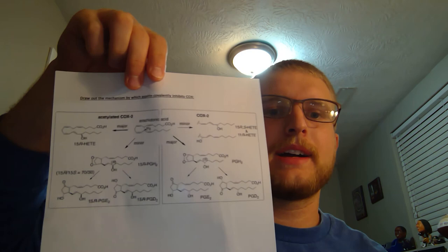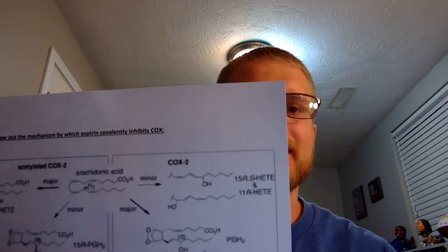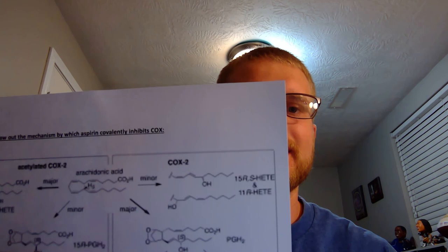Thromboxane A2 — known as TXA2 — is one of the lipids which binds to a receptor and activates the adenylyl cyclase enzyme, resulting in platelet aggregation. Aspirin works by acetylation of a serine residue in the cyclooxygenase enzyme, which helps prevent the formation of prostaglandins, thus overcoming pain and inflammation. It also inhibits the formation of TXA2, acting as an antiplatelet or antithrombotic drug, which is why aspirin can be used for cardiovascular patients.